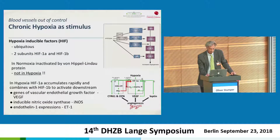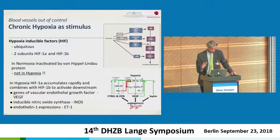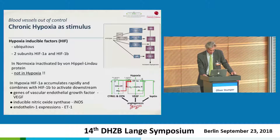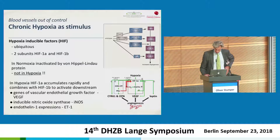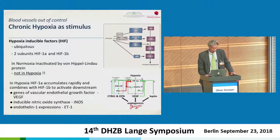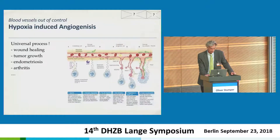There was very interesting insight into angiogenesis this morning. One factor we must include is hypoxia inducible factors — HIF-1 alpha and 1-beta — which happen ubiquitously. In normoxia they are immediately inactivated; however, in chronic hypoxia, HIF-1 alpha accumulates rapidly and combines with 1-beta to activate downstream genes including vascular endothelial growth factor, inducible nitric oxide, and endothelin-1 expression, leading to angiogenesis. This is a universal process also seen in wound healing, tumor growth, endometriosis, and arthritis.